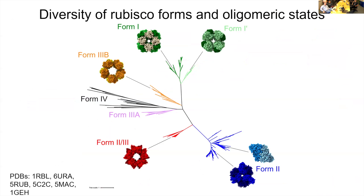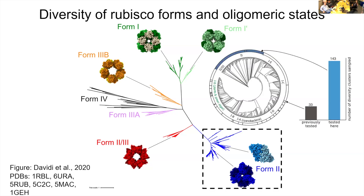When I started my PhD, this is how we thought about RuBisCO oligomeric state. You have Form 1 RuBisCOs at the top — that large 16-subunit structure with eight large subunits and eight small subunits. Right before I started my PhD, Form 1 prime structures were discovered: derivatives of Form 1 that only have the large subunits, with small subunits not yet incorporated. Then there are what I like to call 'weird RuBisCOs' — some archaeal and bacterial RuBisCOs with no small subunits. Form 2 is a particularly interesting clade when looking at oligomeric state.